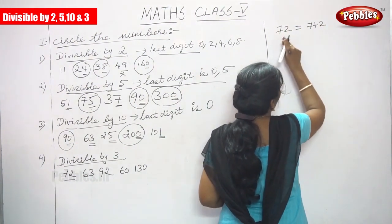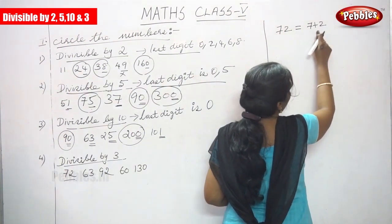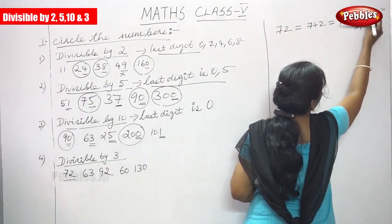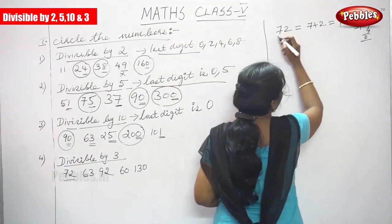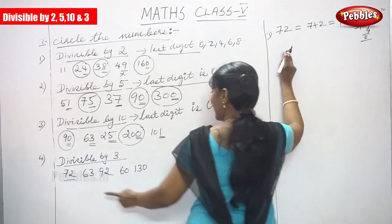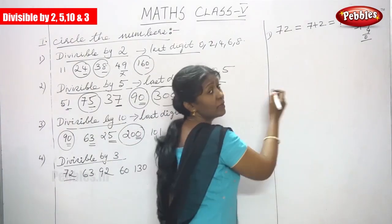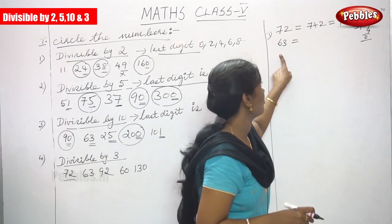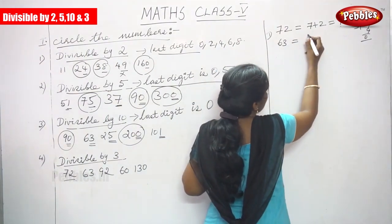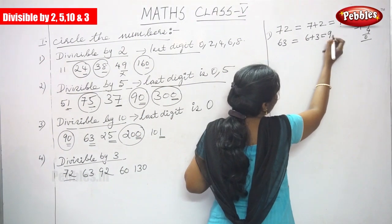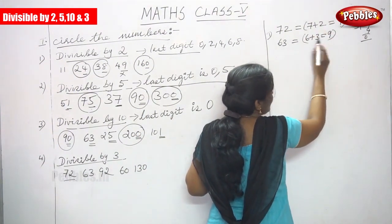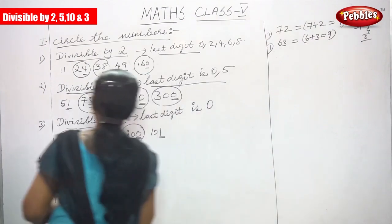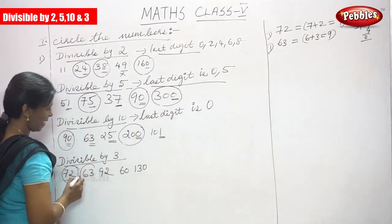72 is divisible by 3, so circle it. Next number is 63: 6 plus 3 equals 9, and 9 is divisible by 3, so 63 is also divisible by 3. Circle 72 and 63.